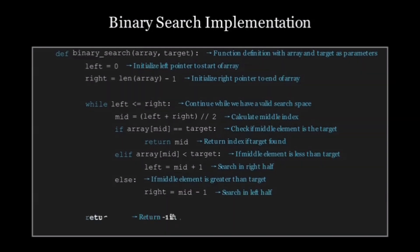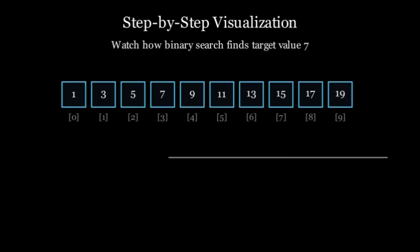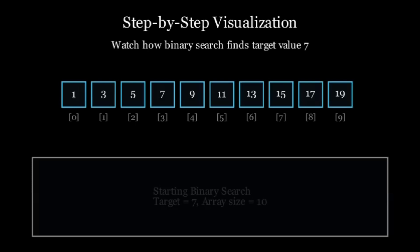And if we exit the loop without finding a target, we return -1 to indicate the target is not in the array. It's simple, right? So let's see this in action with a visualization. Let's visualize binary search step by step. Here is our array with 10 elements and our target is to find 7.